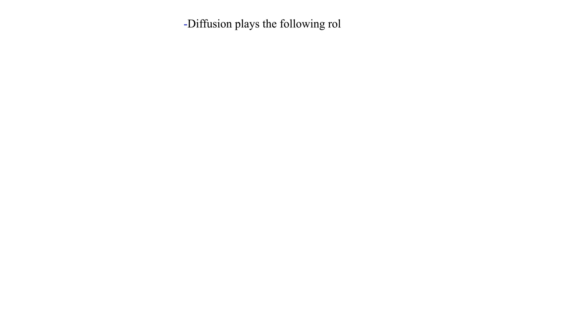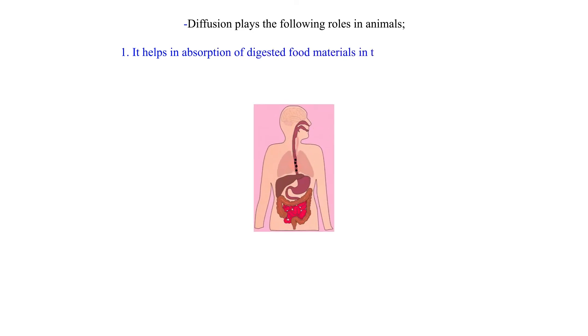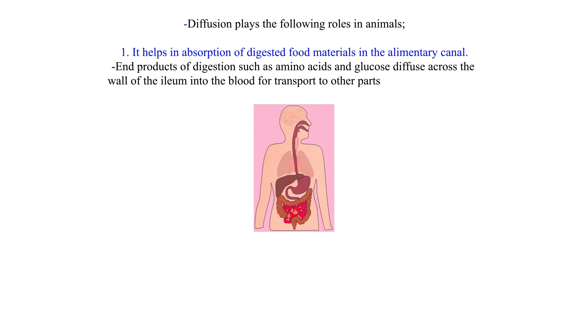Diffusion plays the following roles in animals. 1. It helps in absorption of digested food materials in the alimentary canal. End products of digestion such as amino acids and glucose diffuse across the wall of the ileum into the blood for transport to other parts of the animal's body.